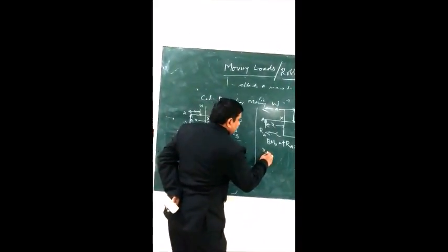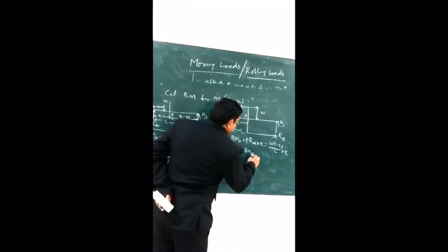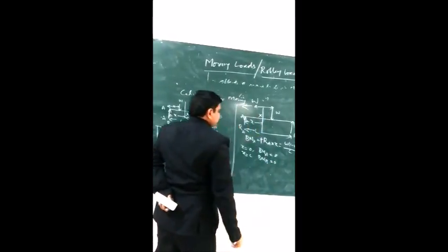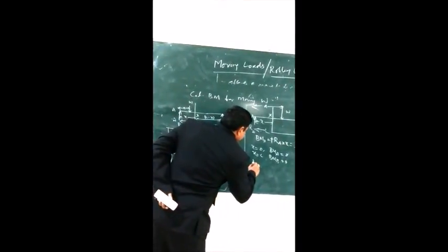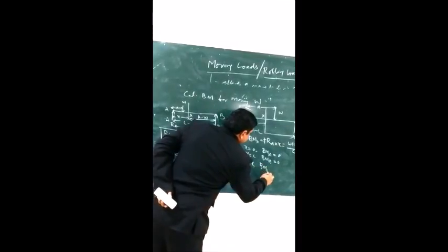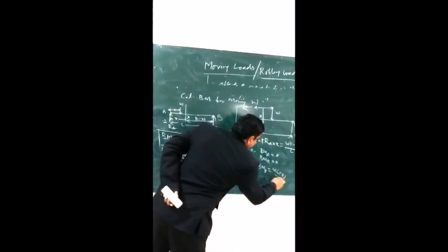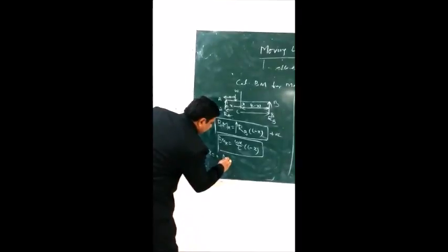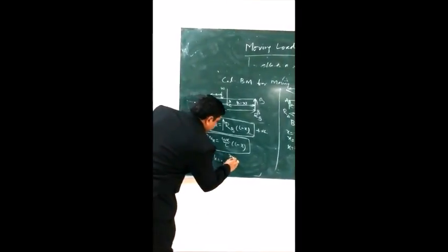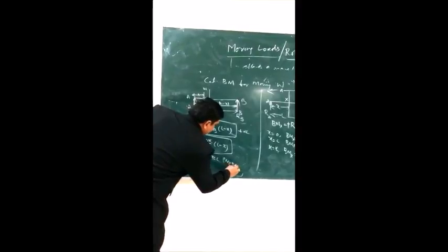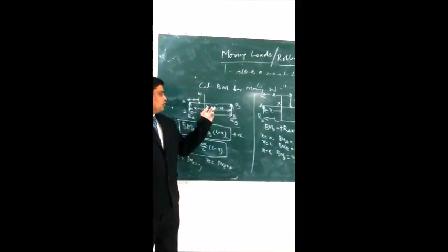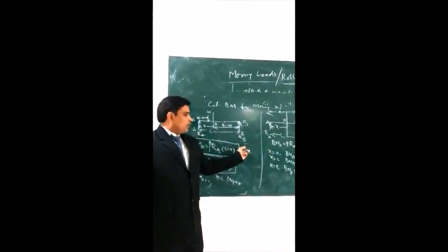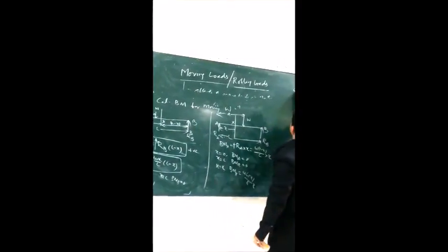When x = 0, bending moment at A = 0. When x = L, bending moment at B = 0. At section X, bending moment = W(L − x)/L × x for Case 2, and W(x/L)(L − x) for Case 1. Notably, these two expressions are identical. So the bending moments for both cases are the same.